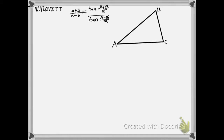The first construction we're going to do is to construct the angle bisector of angle C in this triangle. This gives us two small angles, which we'll call theta and theta. We'll name the point where the bisector meets the opposite side D, and we'll continue this line past AB.